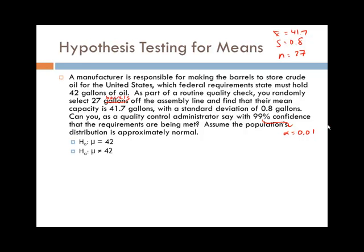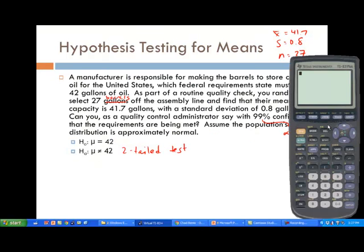The null and alternative hypothesis looks like we have a two-tailed test here as well. Remember that the p-value is calculated by doubling, but the calculator will give us the p-value that is the correct one. So we will use the t-test here with the statistics that the 42 is the comparison mean, x-bar is 41.7, s is 0.8, n is 27, and that we are doing a two-tailed test here.